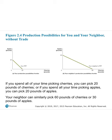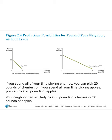Your production possibility frontier shows 20 pounds of apples or 20 pounds of cherries, with any combination in between. Your neighbor's PPF shows they could yield 30 pounds of apples or 60 pounds of cherries, or some combination in the middle.